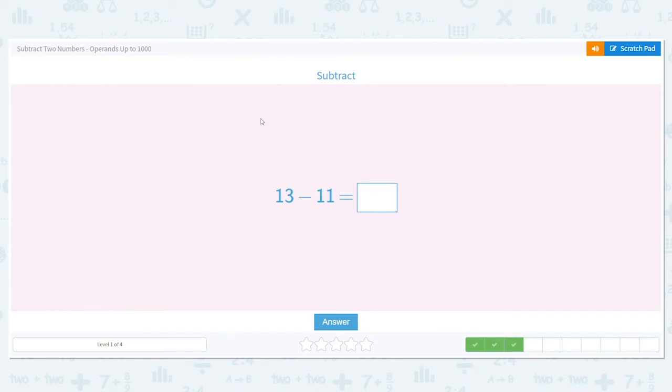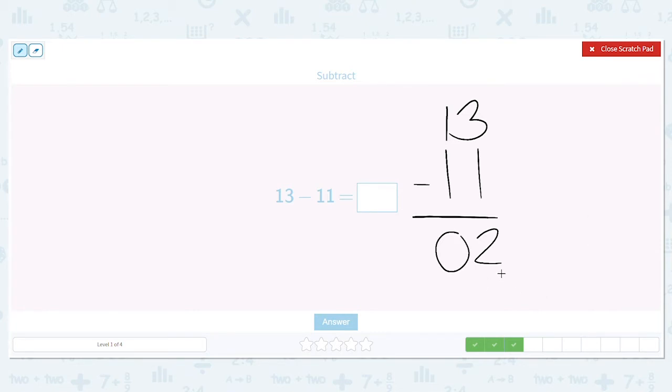Let's write it in our column form as practice. And again, you might be able to look at it and just answer it. But let's practice. If I have 3 apples, do I have enough to give you one of them? I do. So I can subtract it. What is 3 minus 1? It's 2. And what is 1 minus 1? 0. So 13 minus 11 is 2.